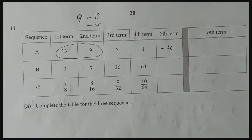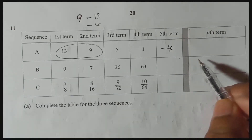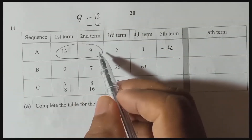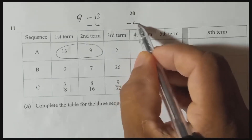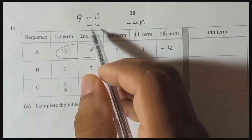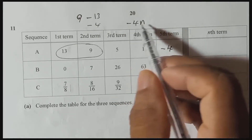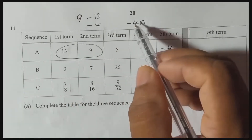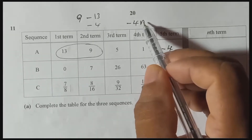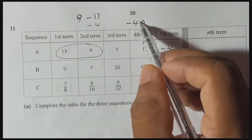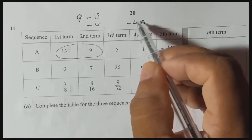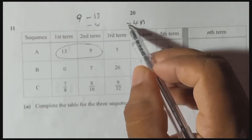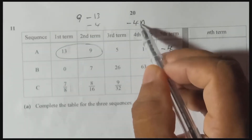So the fifth term uses the common difference minus 4. For the nth term, we can find it easily for this arithmetic sequence. I will show you an easy method. The common difference is minus 4, so I will put minus 4 times n. If n equals 1, it gives minus 4. To get to the first term 13, how much should you add?